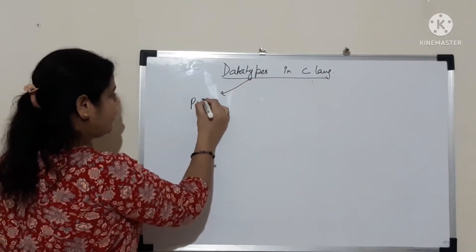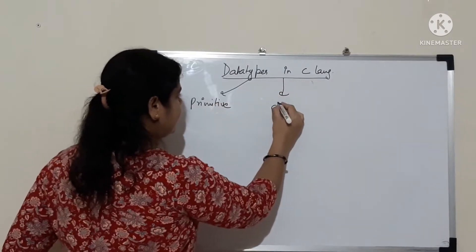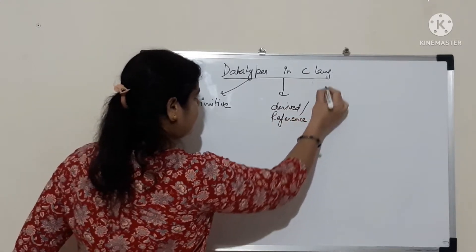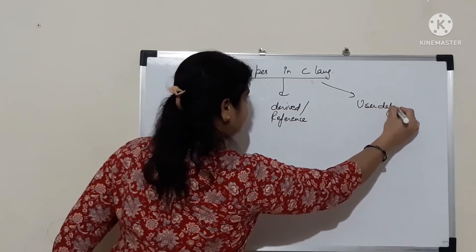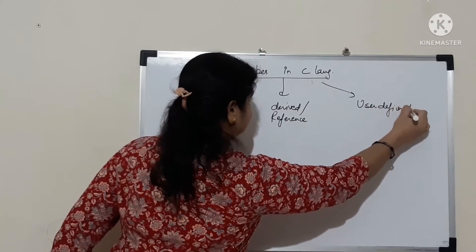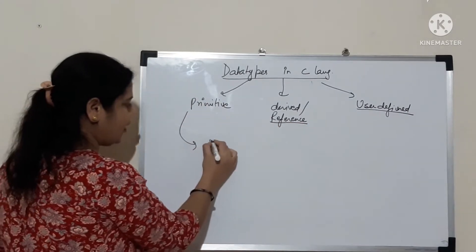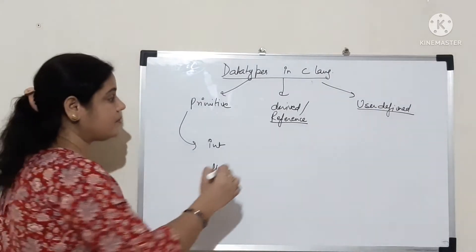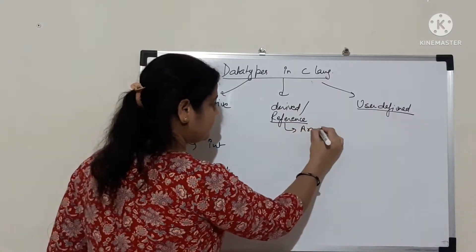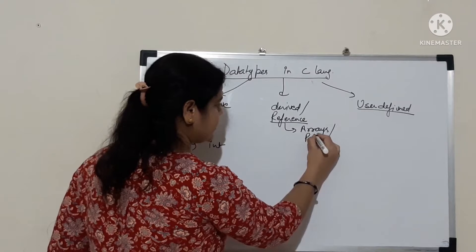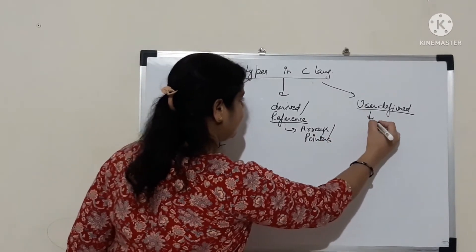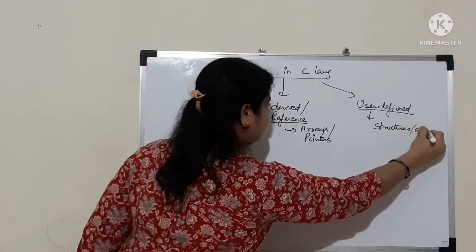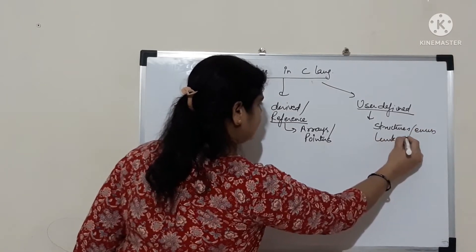First is primitive data types. Second is derived or referenced data types. Third are user-defined data types. In primitive data types, we have integer, float, and char — the 3 basic data types. Derived data types are arrays and pointers. User-defined data types are structures, enums, linked list, etc.